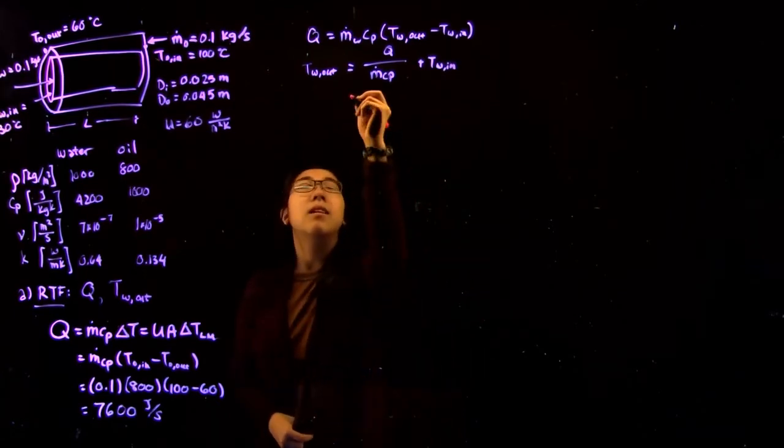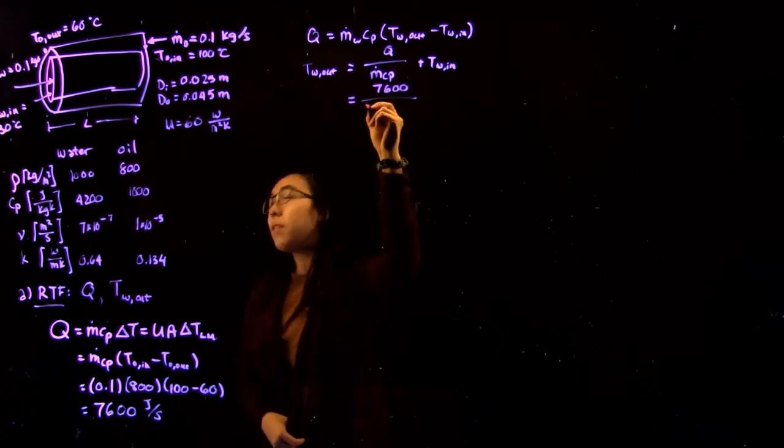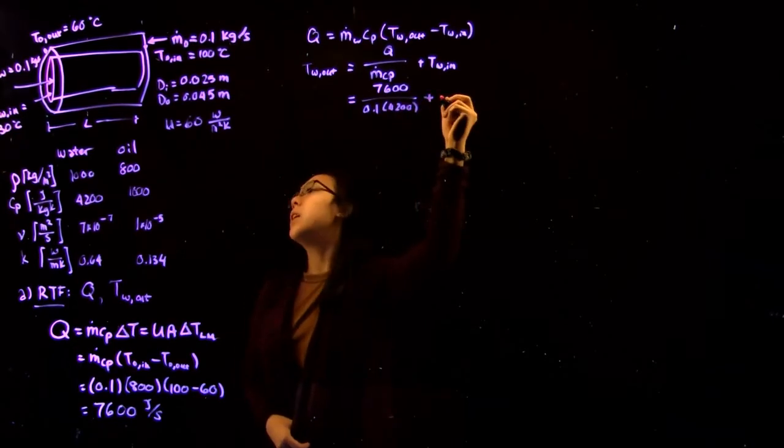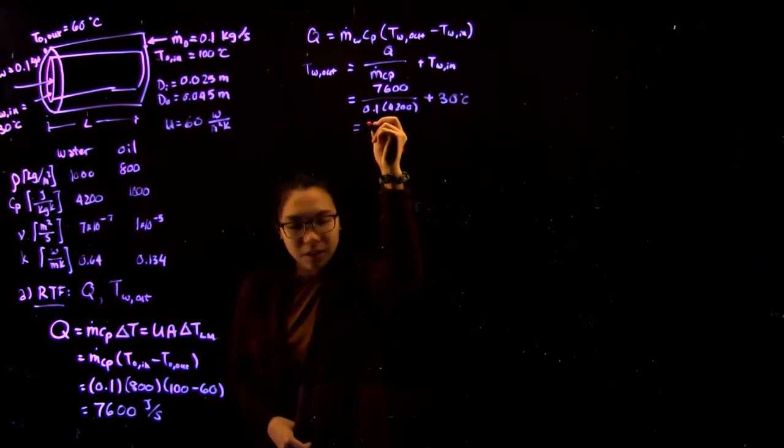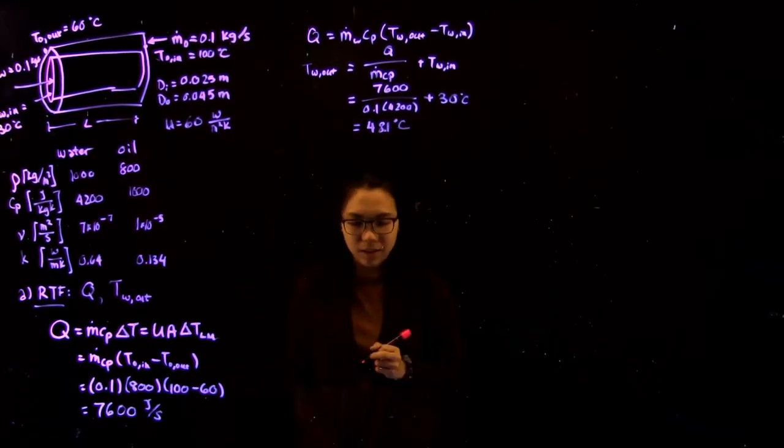And this gives us 7600 over 0.1 times 4200 plus the initial temperature of 30 degrees Celsius, which gives us an outlet water temperature of 48.1 degrees Celsius.